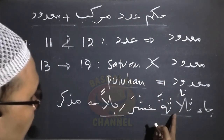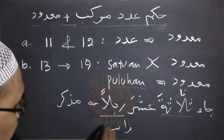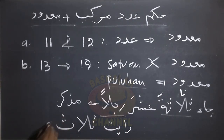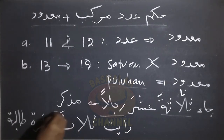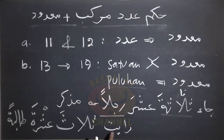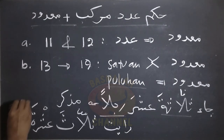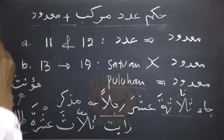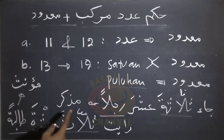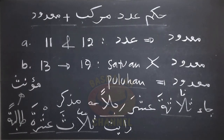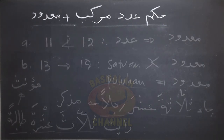Contoh yang lain: Ro'aytu tiga belas Polibatan — siswi. Kita perhatikan makdudnya di sini berupa lafaz Polibatan yang berjenis mu'anas. Maka dalam hal ini puluhannya harus sama jenisnya, berupa lafaz Asyrota mu'anas. Namun untuk satuannya harus berlawanan dengan makdudnya: Tsalatsa di sini berbentuk mudakar — Tsalatsa, bukan Tsalatsata — namun Tsalatsa Polibatan. Jadi mudakar untuk satuan, mu'anas untuk makdud. Ini hukum adat murokab terkait dengan makdud di dalam adat asli.